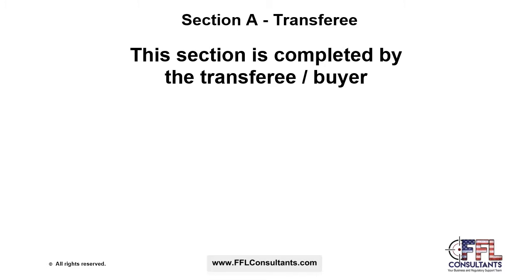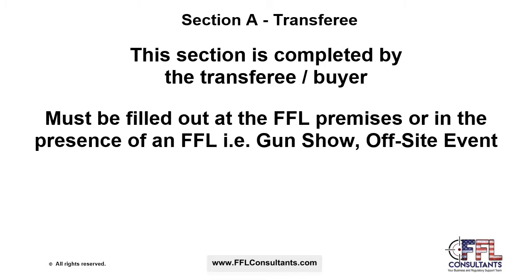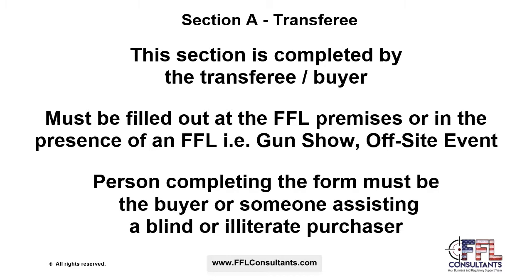Now we will start to discuss the Form 4473 completion process, beginning with Section A, which is completed by the transferee or purchaser. Section A must be filled out at the FFL premises or in the presence of the FFL or FFL employee — this could occur off-site, for instance at a gun show. The person completing the form must be the buyer or someone assisting a buyer who may be blind or possibly illiterate.